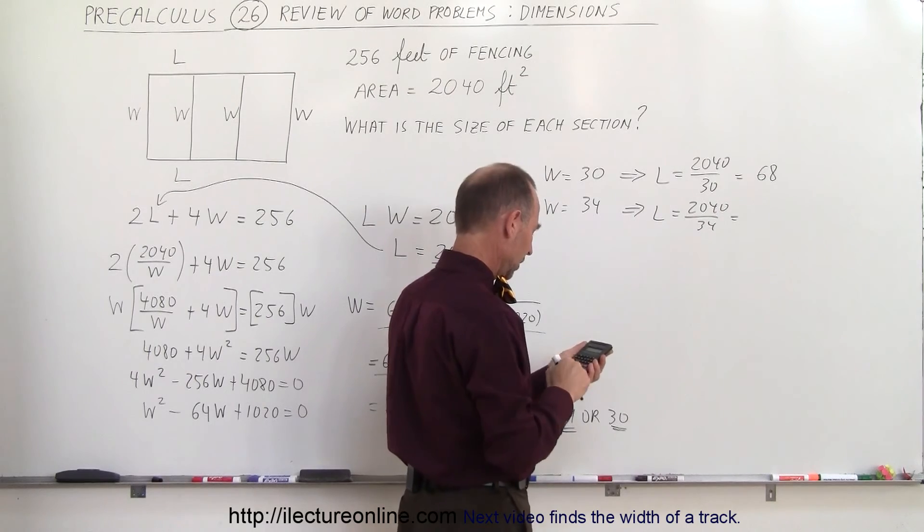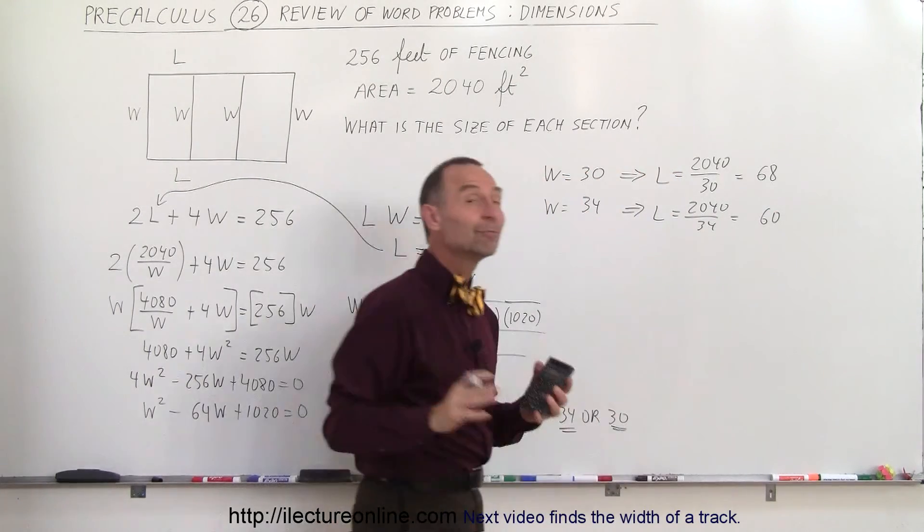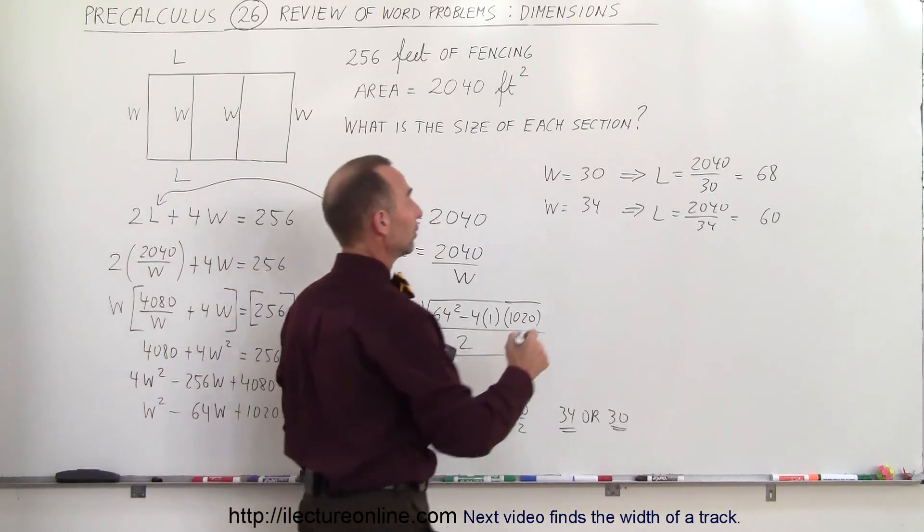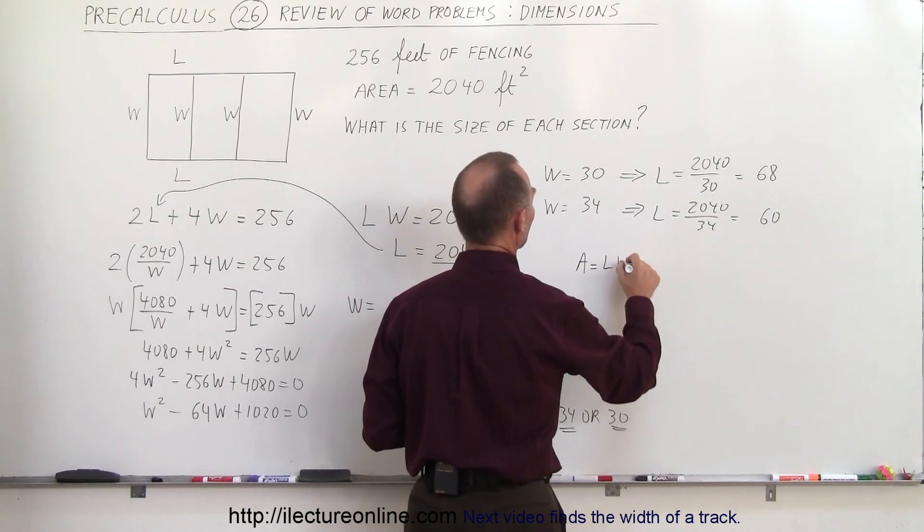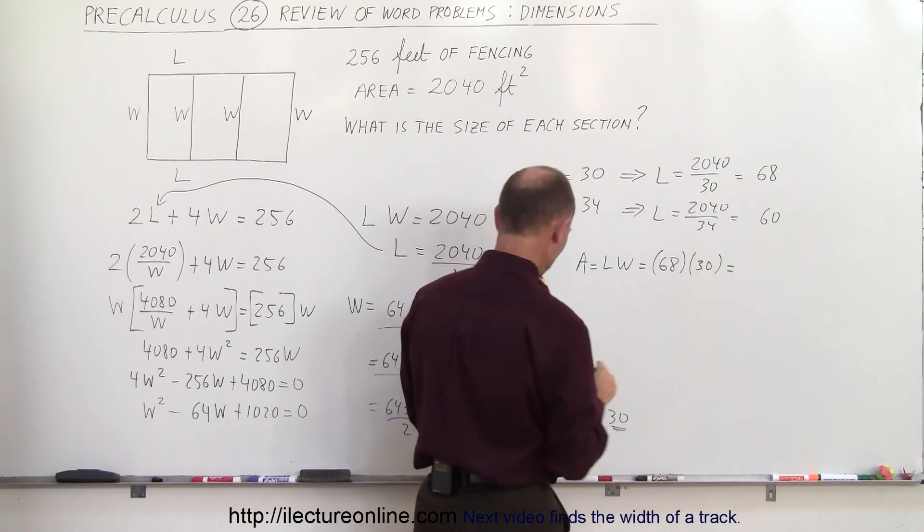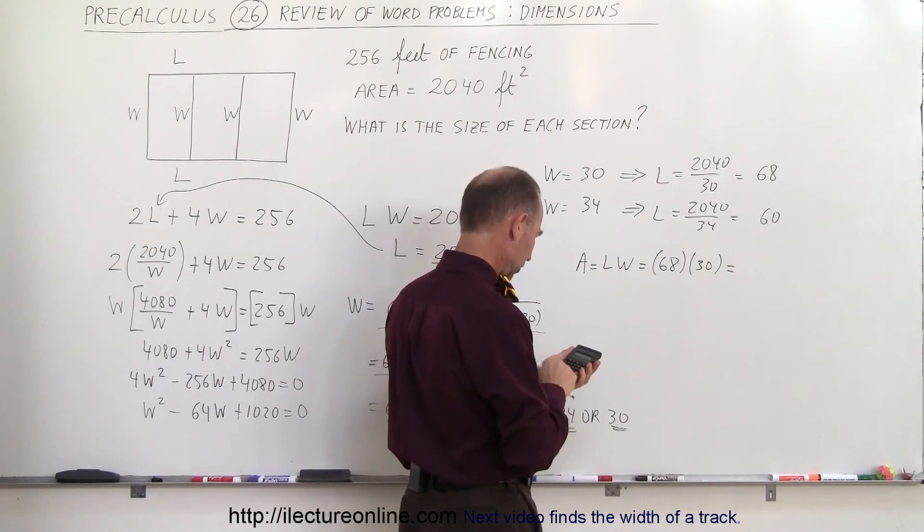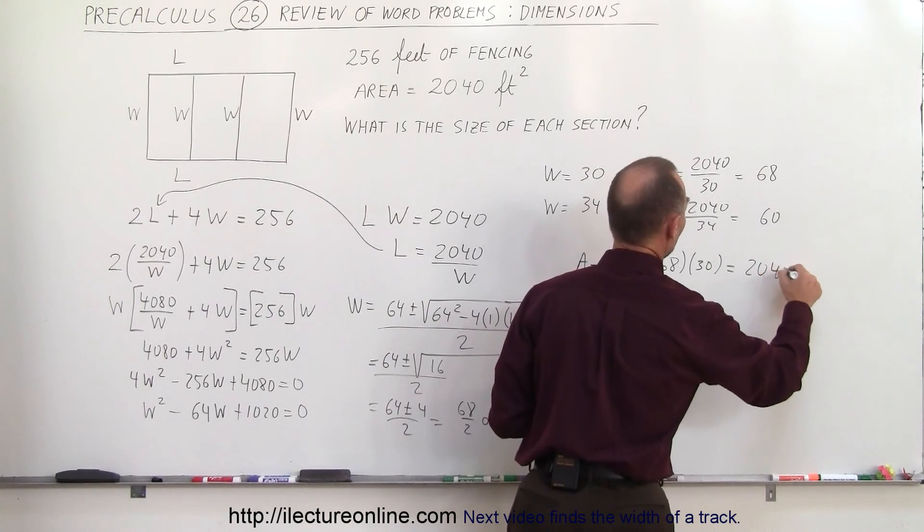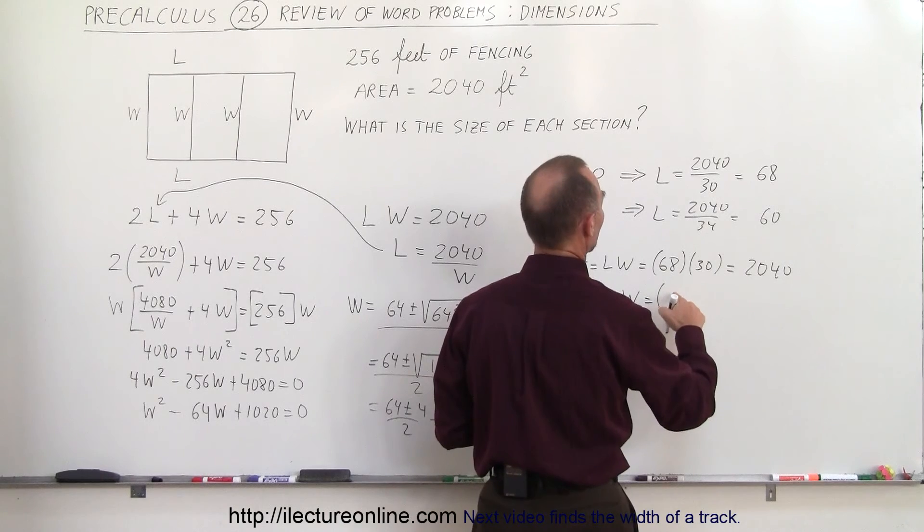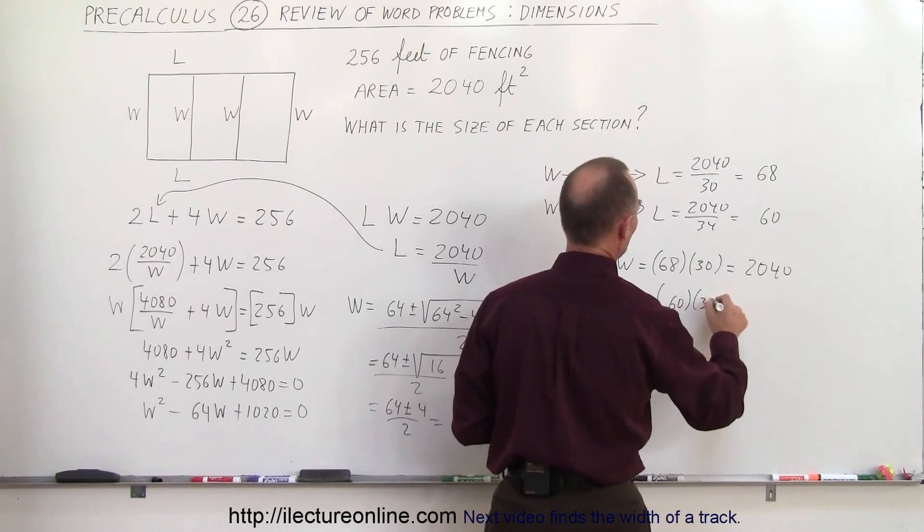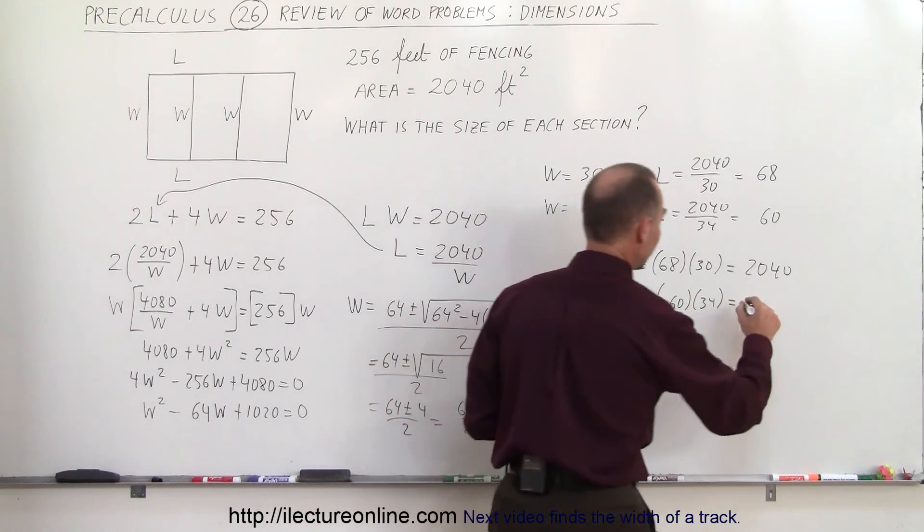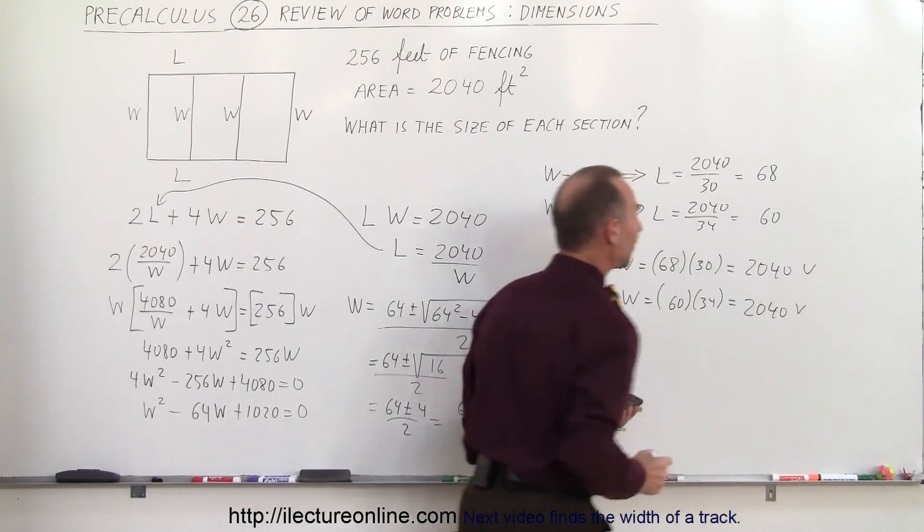Let's see if both of those answers are plausible. We know that the area has to be 2040 so in the first case the area would be the length times the width which would be 68 times 30 and we get 2040 so that works. How about the second answer, area equals length times width which is equal to 60 times 34 equals 2040. They both check so we have the option here